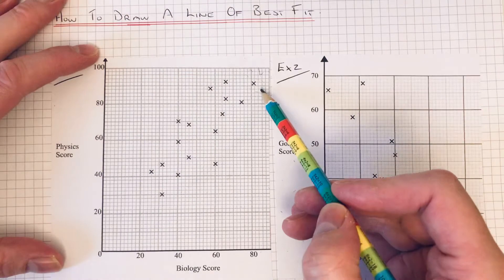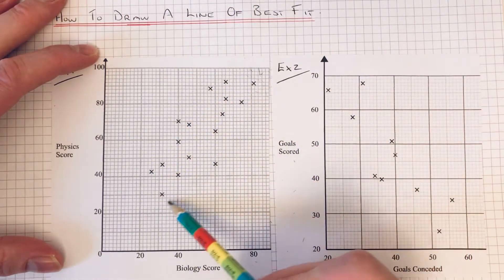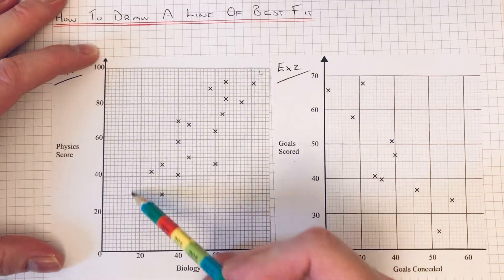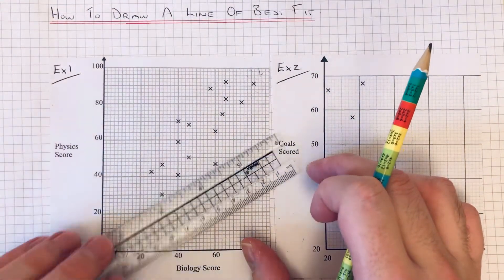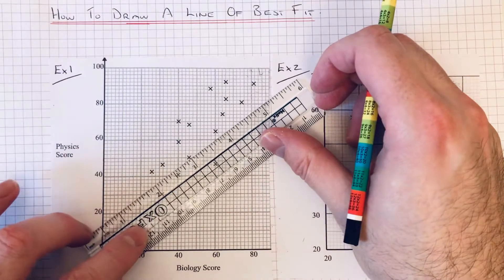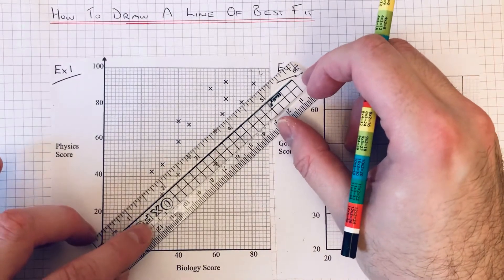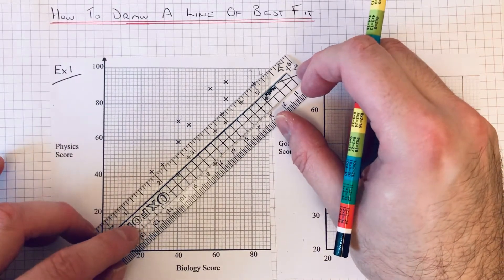So we need to get a line of best fit somewhere through the center of most of these points. You can also try to get the same amount of points either side of the line. So I reckon it's gonna be something like that.